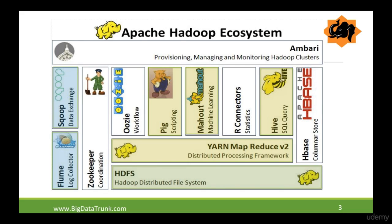The next block, Mahout, is the machine learning component in the open source world. Mahout provides several APIs which can help us write machine learning algorithms and can be used in conjunction with big data. This tool, along with R connectors, is highly used by the data scientist community. They use these two techniques for machine learning and statistical and mathematical calculations, which can be incorporated with big data to create very useful solutions.